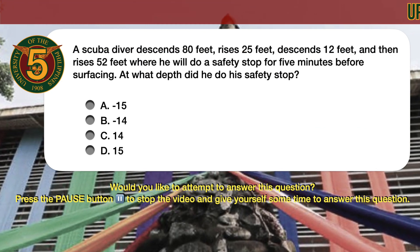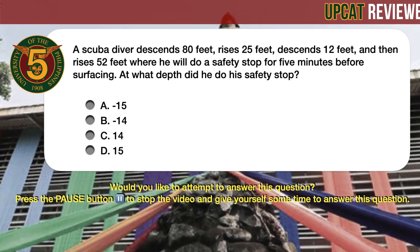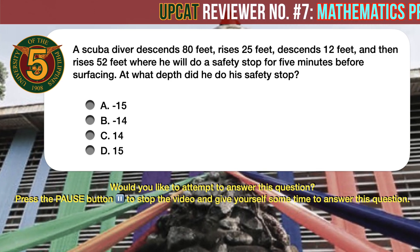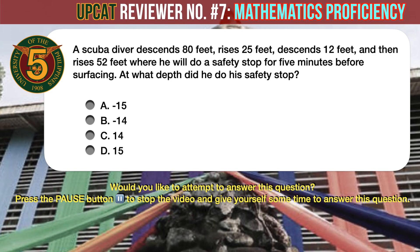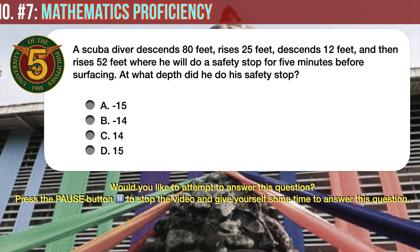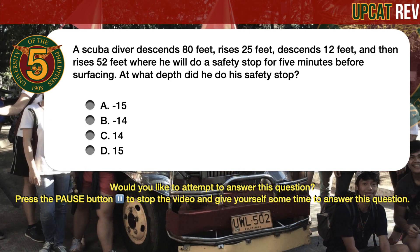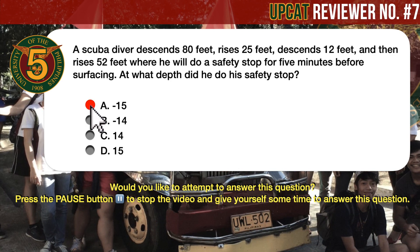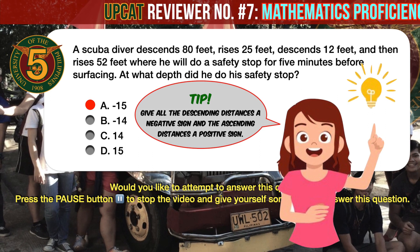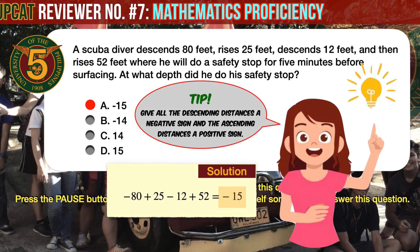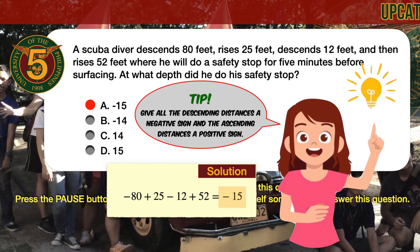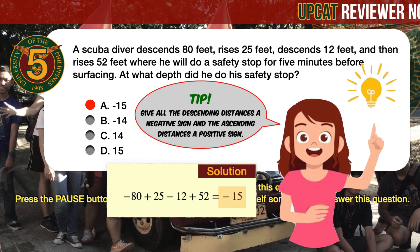Question number 5. A scuba diver descends 80 feet, rises 25 feet, descends 12 feet, and then rises 52 feet where he does a safety stop for 5 minutes before surfacing. At what depth did he do his safety stop? The correct answer is A, minus 15 feet. Assign negative signs to descending distances and positive signs to ascending distances, then solve: minus 80 plus 25 minus 12 plus 52 equals minus 15. The diver did his safety stop at minus 15 feet.